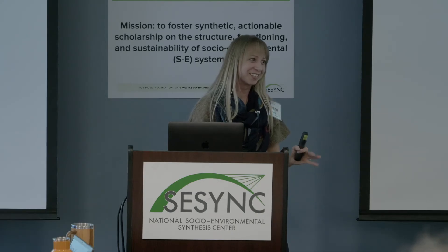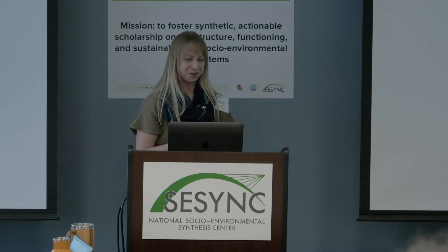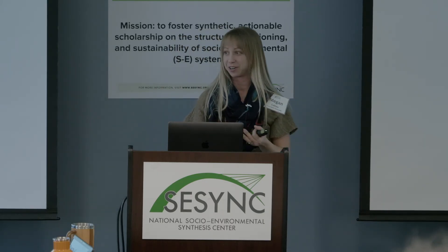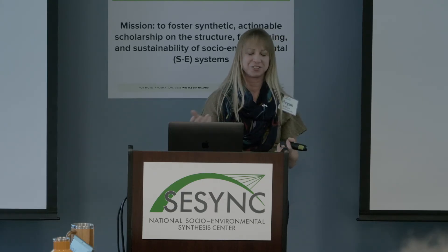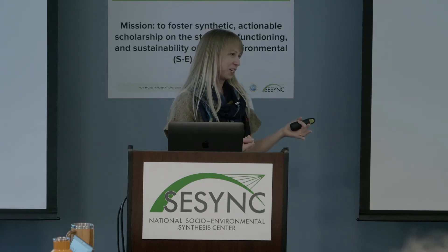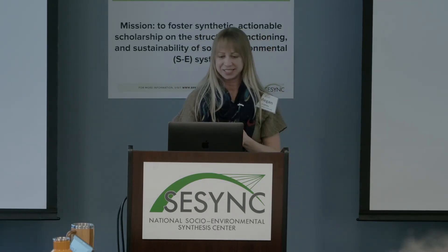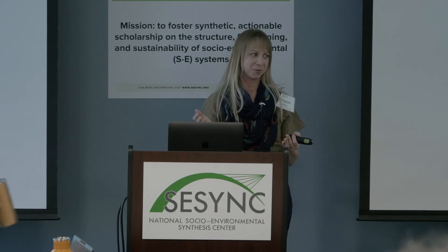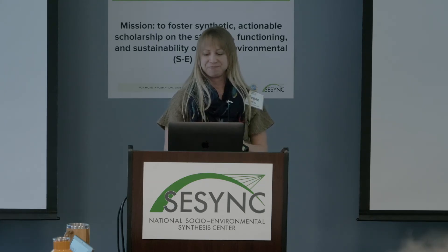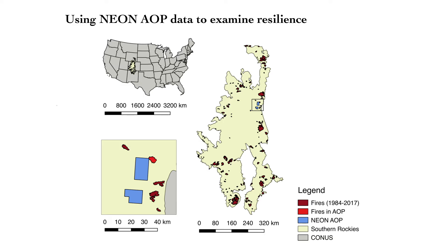A couple of caveats: this is just showing fire, so NEON data might actually capture a history of other disturbance types more comprehensively. Another caveat is that this is only modern fire from 1984 — fire has been around for millennia, so deeper fire history might actually be included in many of these sites. Most importantly, this is not a fault of NEON data — it was not designed to capture disturbance history; it was designed to cover environmental gradients. Nevertheless, I want to show how we're using NEON AOP to capture post-fire recovery even without much fire included within the AOP extents.